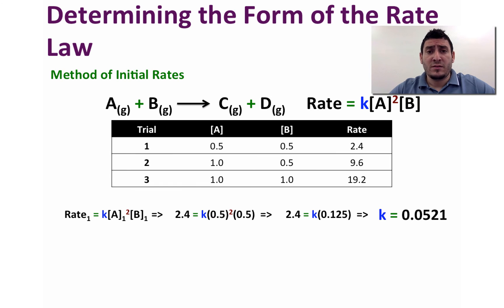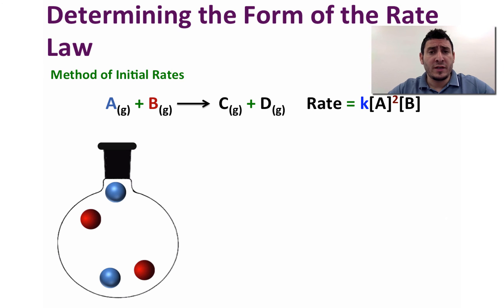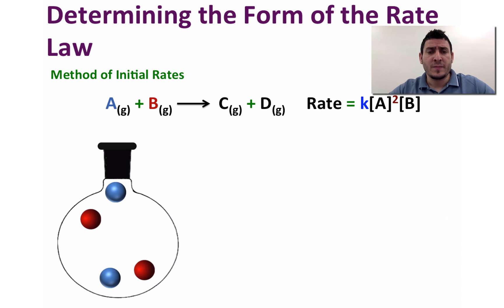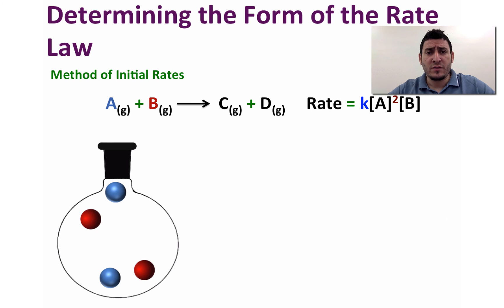You would get the same value, or a very close value, if you choose trial 2 or trial 3. Now let's study the effect of the order of each reactant on the overall reaction rate. Consider the reaction A plus B gives C plus T, where initially we have the same concentration of A and B — represented by two particles each. The rate equals K times concentration of A squared times concentration of B to the first power, so it is second order in A and first order in B.